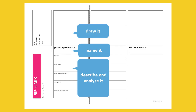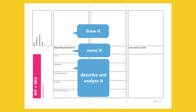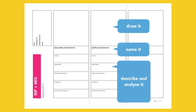They fill in the first column of the sheet by drawing it, naming it and briefly describing and analysing it. After this, the teams discuss pain points or problems and reach a consensus on which one they'll tackle. This is then drawn, named, described and analysed using the same categories.